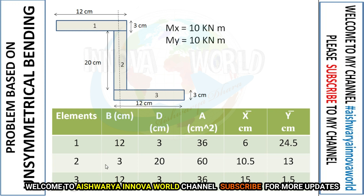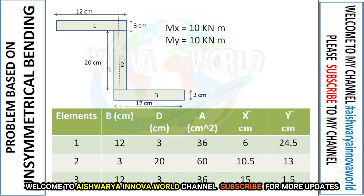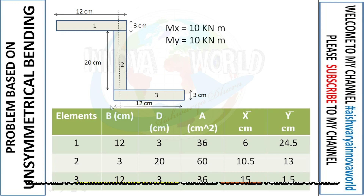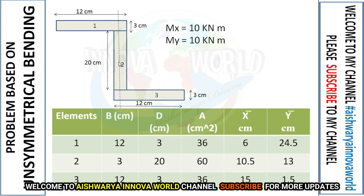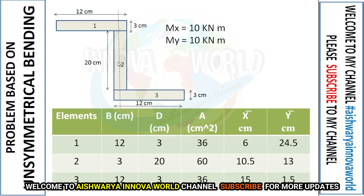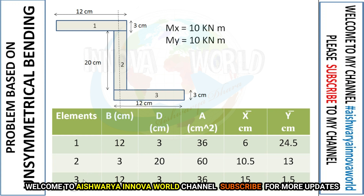For the second element: breadth = 3 cm, depth = 20 cm, area = 60 cm². The x̄ is 9 + 1.5 = 10.5 cm from the reference point. For ȳ, half the web height is 10 cm, so 10 + 3 = 13 cm.